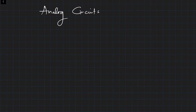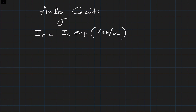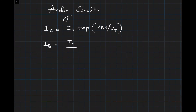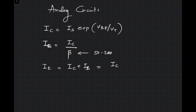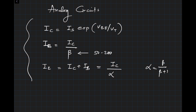The key equations we derived for the bipolar transistor are: IC = IS · exp(VBE / VT), base current IB = IC / β where β is typically 50 to 200, and emitter current IE = IC + IB = IC / α, where α = β / (β + 1). These are the main equations for the BJT in the forward active region.